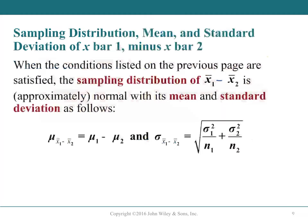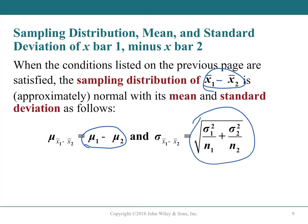The sampling distribution of x̄₁ - x̄₂ is normal with mean μ₁ - μ₂. The standard deviation is the square root of (σ₁²/n₁ + σ₂²/n₂)—essentially the sum of the variances divided by their sample sizes, then square-rooted to get back to standard deviations.